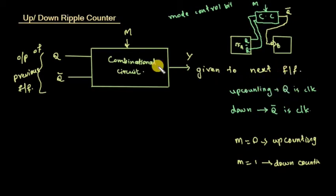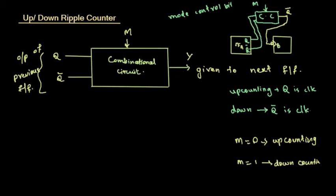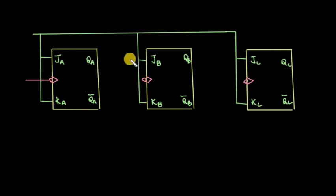For a 3-bit asynchronous counter with up or down counting, we have a combinational circuit design. This is a 3-bit asynchronous counter circuit with a combinational circuit to decide whether QA or QA-bar is used.